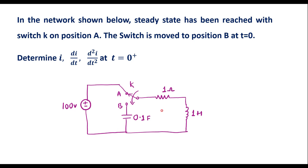This is the given circuit. Here we can see that the switch K is connected to position A and this switch will move to position B at t equal to 0. It is also said that the circuit has reached steady state when it is connected to position A.